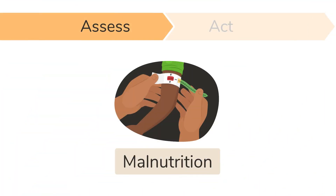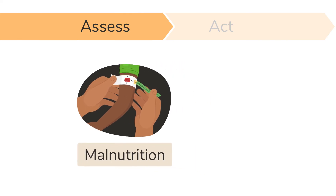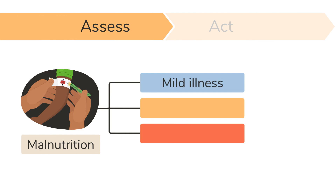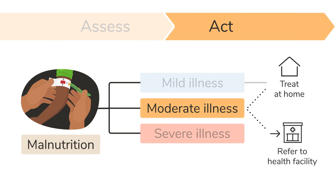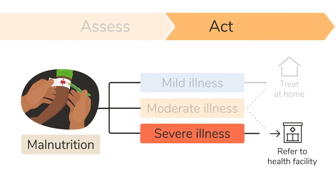Once you have completed your assessment, you can decide if the child is malnourished and if so, whether it is a sign of a mild, moderate or severe illness. If it indicates a mild illness, you can help the caregiver treat the child at home. If it indicates a moderate illness, you will decide whether the symptoms can be treated at home or if the child needs to be referred. However, if it indicates a severe illness, you should refer the child urgently to a health facility.